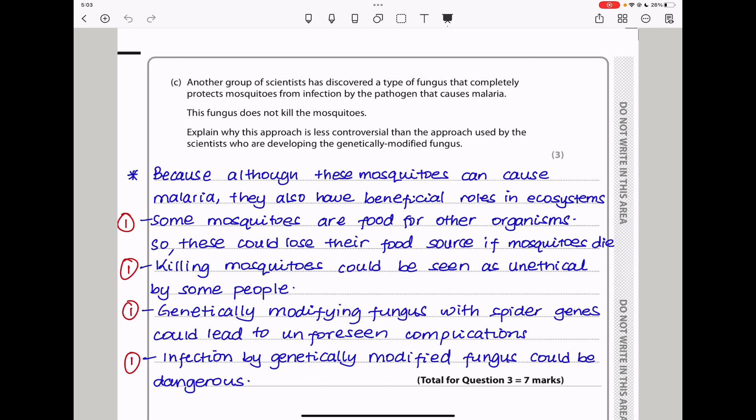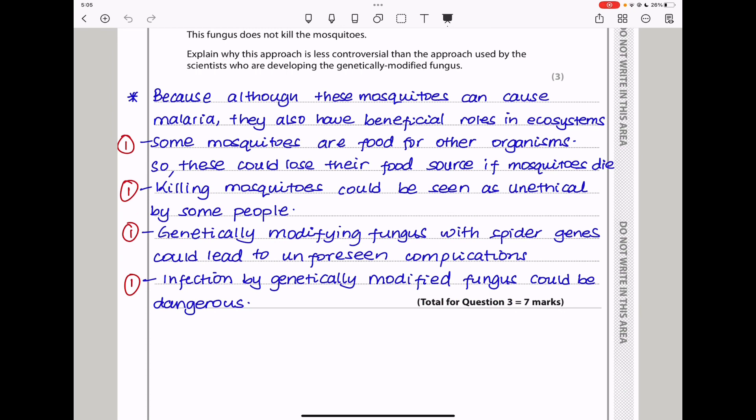Moving on, they say another group of scientists has discovered a type of fungus that completely protects mosquitoes from infection by the pathogen that causes malaria. This fungus does not kill the mosquitoes. Explain why this approach is less controversial than the approach used by the scientists who are developing the genetically modified fungus. This would be beneficial because if the mosquitoes are not infected with a pathogen, then they cannot transfer the pathogen to the humans or to other organisms that are affected by malaria. Although these mosquitoes can cause malaria, they also have beneficial roles in ecosystems. Some mosquitoes are food for other organisms, so these could lose their food source if mosquitoes die. Killing mosquitoes could be seen as unethical by some people. Genetically modifying fungus with spider genes could lead to unforeseen complications. Finally, infection by genetically modified fungus could be dangerous. If that toxin causes toxicity to those organisms, then this could be life-threatening. This brings us to the end of question three.